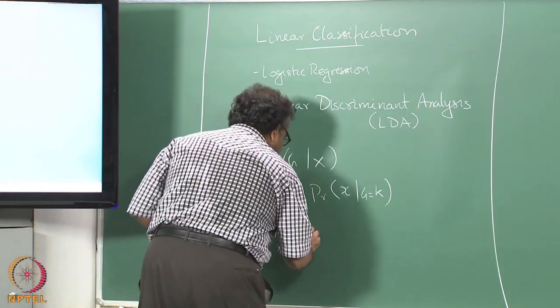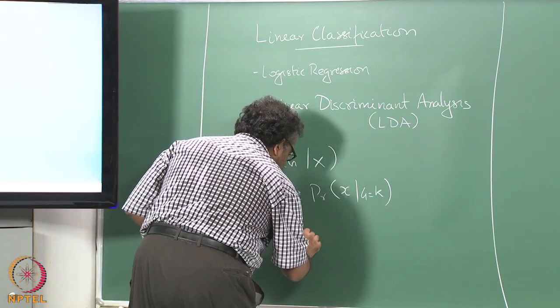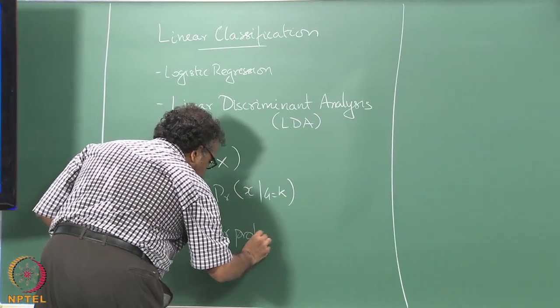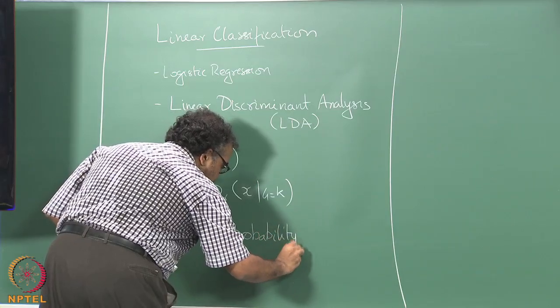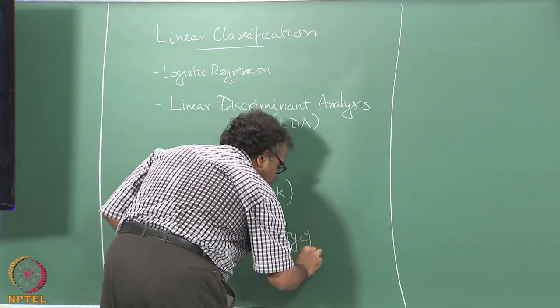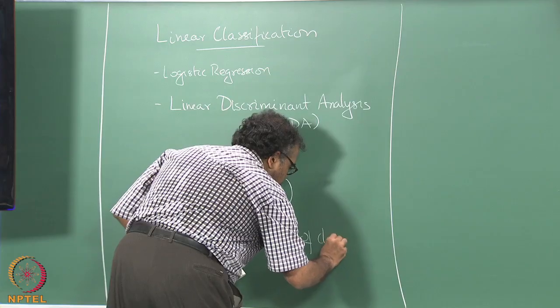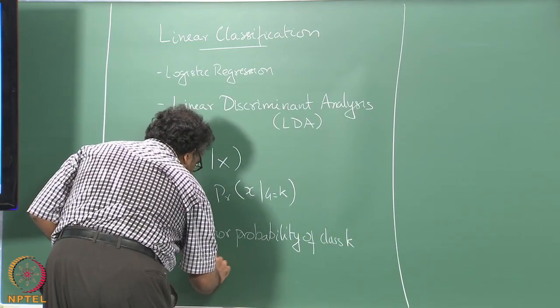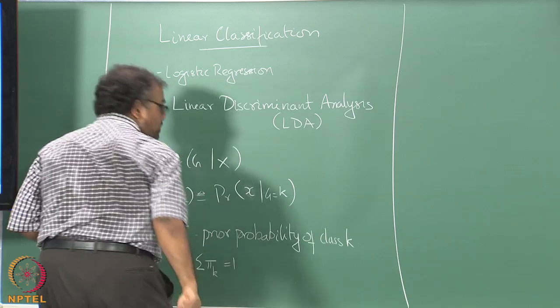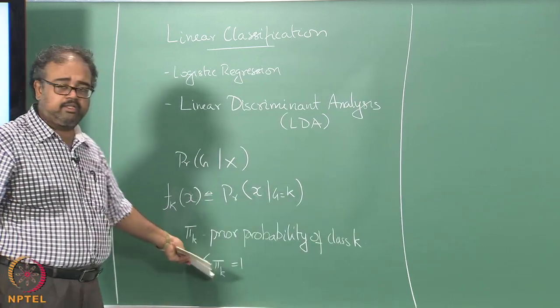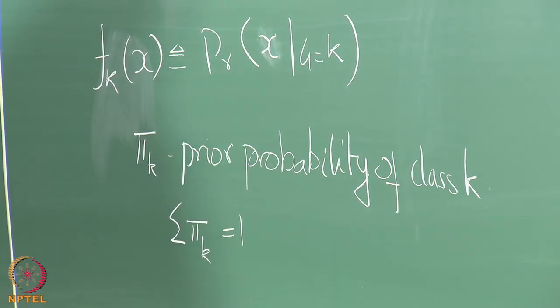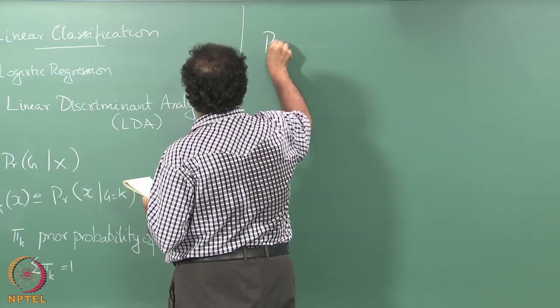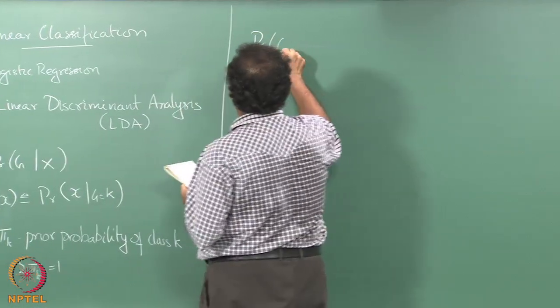We assume that all data points belong to some class or the other, so that is going to be 1. This is the prior probability of the class.